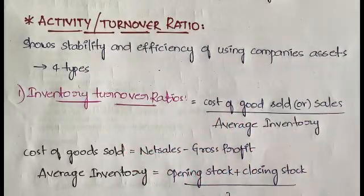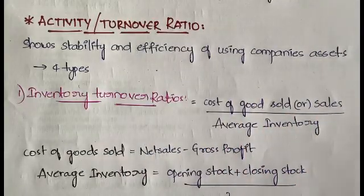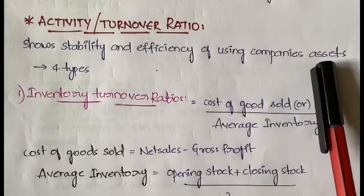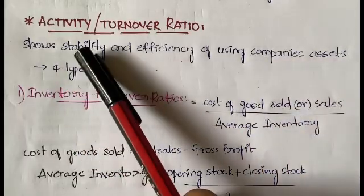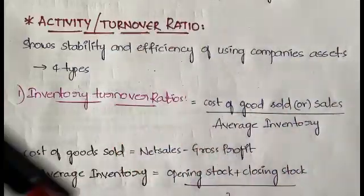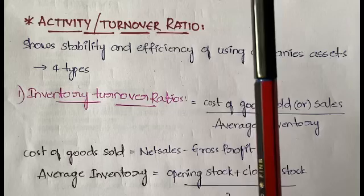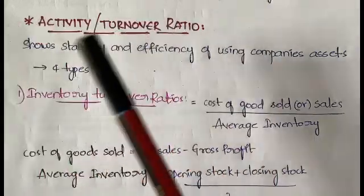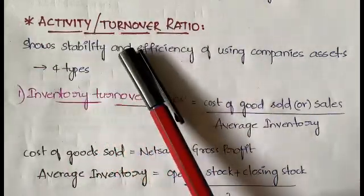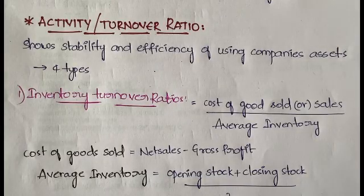Activity ratios show us the stability and efficiency of using a company's assets. A company will have assets, and we use those assets in order to make finished goods or to make profits. How efficiently and stably we are using those assets will be known to us with the help of activity or turnover ratios. In this we have four types of ratios.